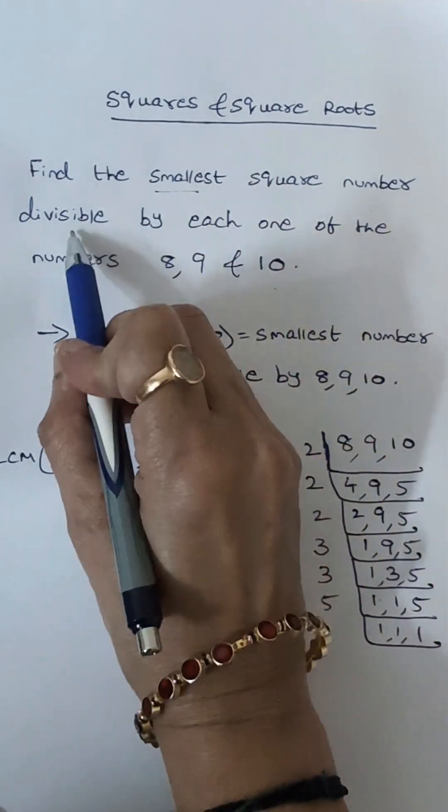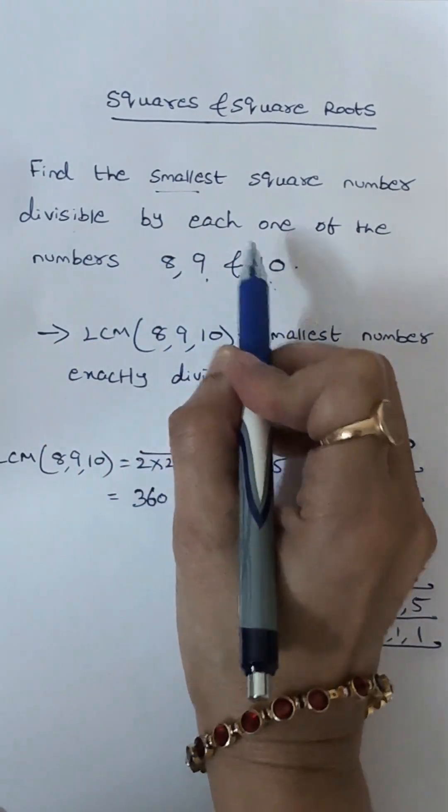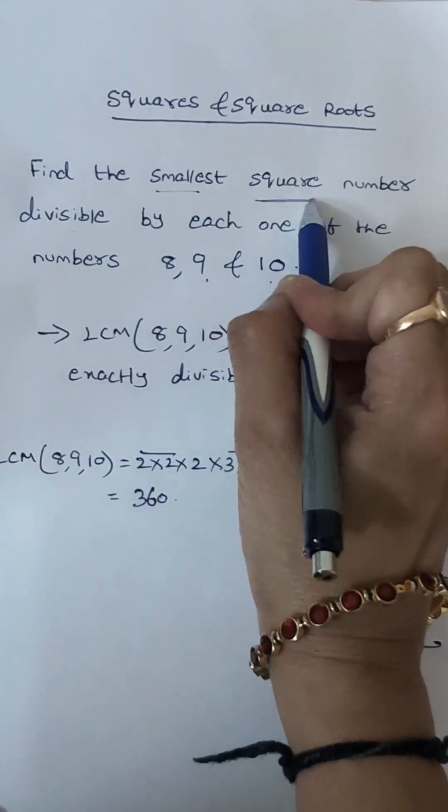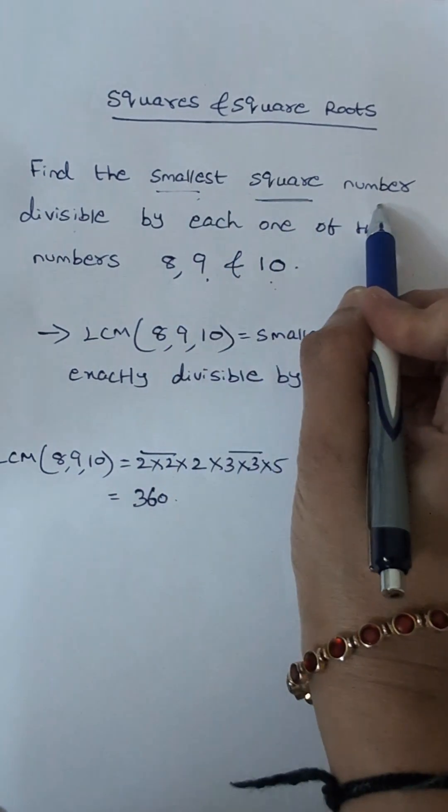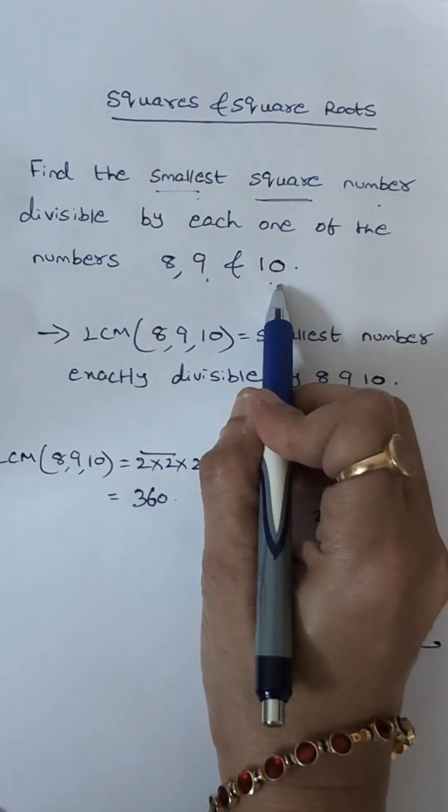Now we want the smallest number which is divisible by 8, 9, 10 and that smallest number should be a square number. That means we have to find the perfect square smallest number that should be divisible by 8, 9, 10.